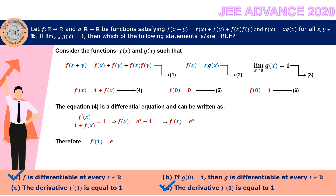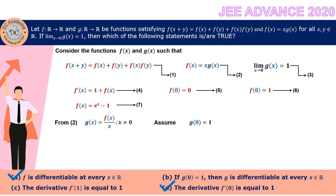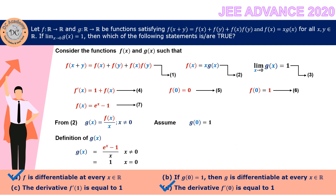Only option B remains. It asks about the differentiability of g(x) under the condition that g(0) = 1. From relation 2, g(x) = f(x)/x for x ≠ 0, but this is undefined at x = 0. So we define g(x) piecewise: g(x) = (e^x - 1)/x for x ≠ 0, and g(0) = 1.